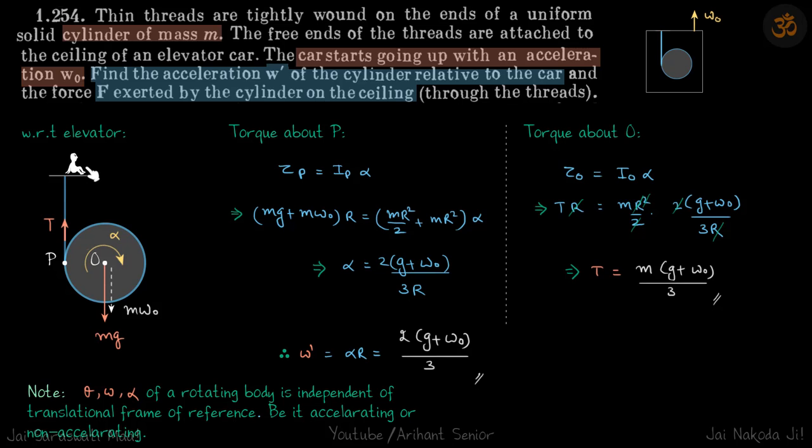So now the elevator is moving up with W naught, so the center of mass will experience a pseudo force downwards that will be M W naught. And Mg is already there, and the third force is tension. So now we have these three forces.